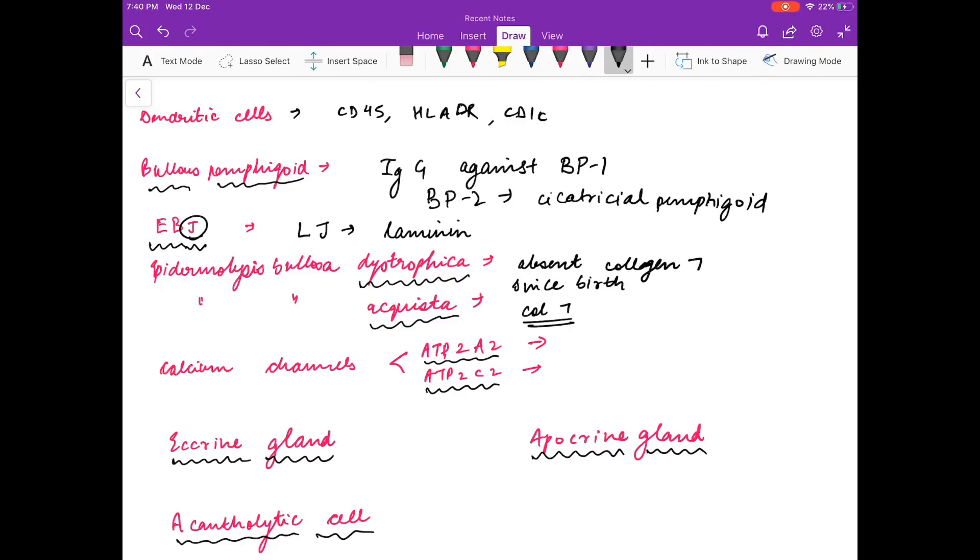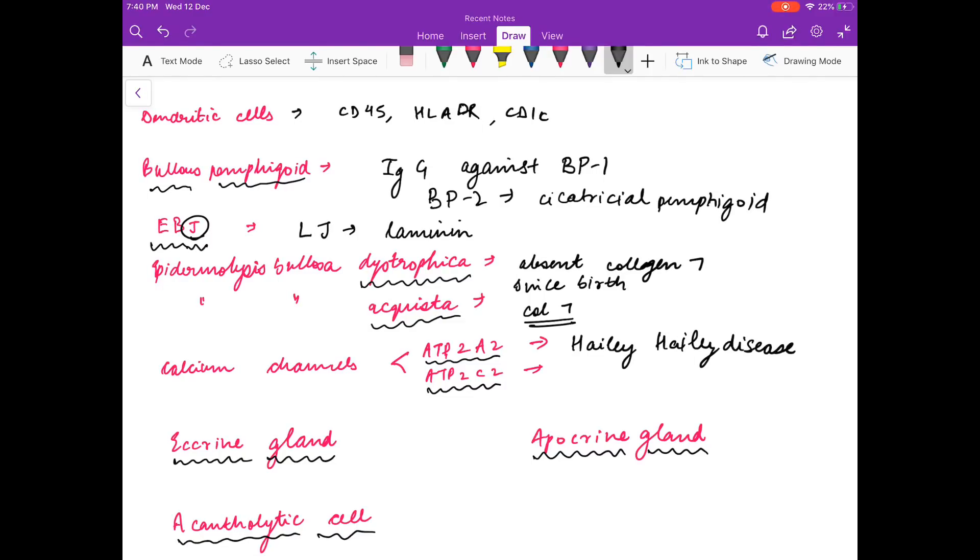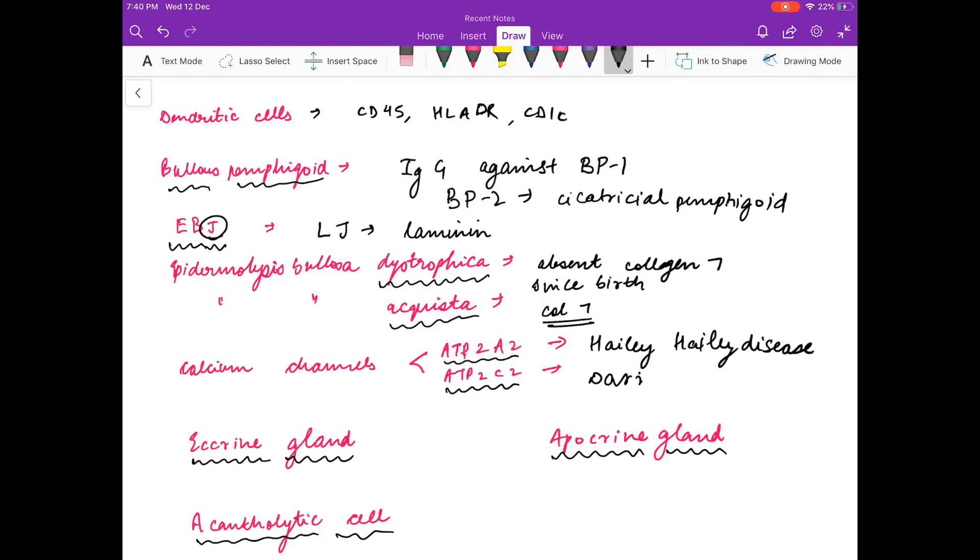ATP2A2 mutation causes Hailey-Hailey disease, and ATP2C2 mutation causes Darier's disease. And Darier's sign is seen in urticaria pigmentosa. What are the disorders of apocrine glands? Miliaria, hyperhidrosis. And what are the disorders of apocrine glands? Acne and hidradenitis suppurativa.